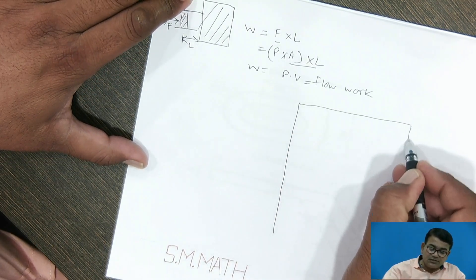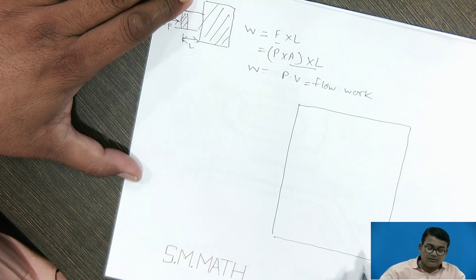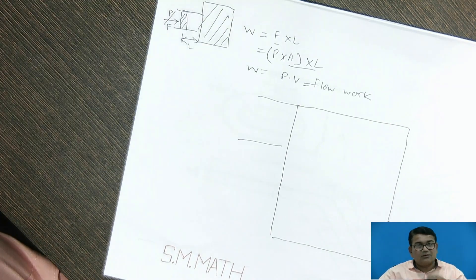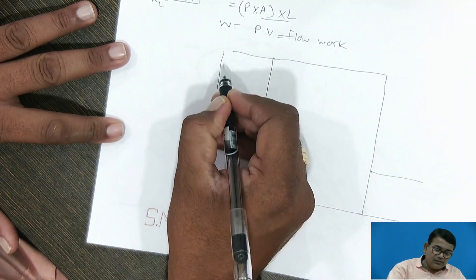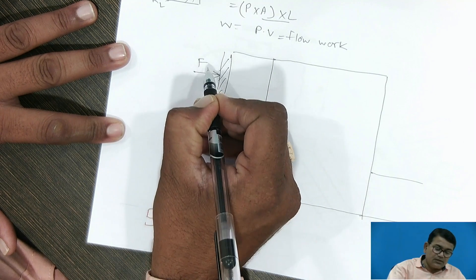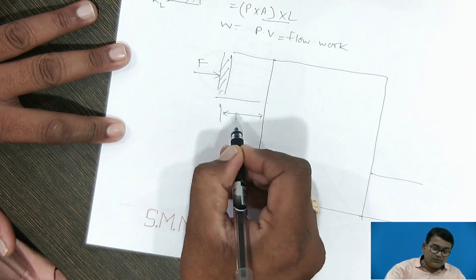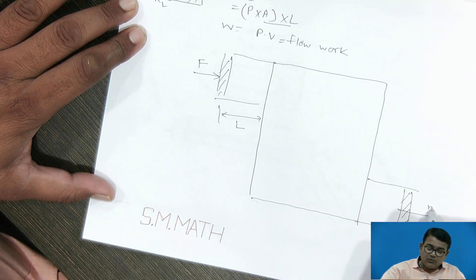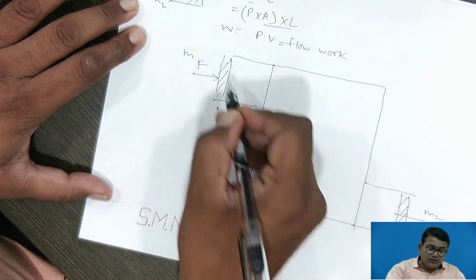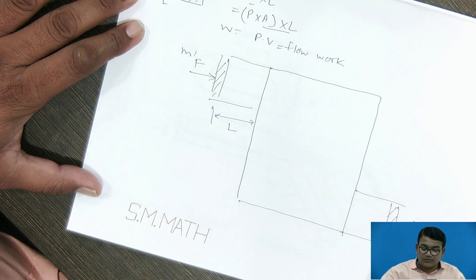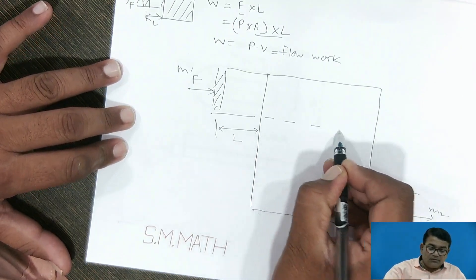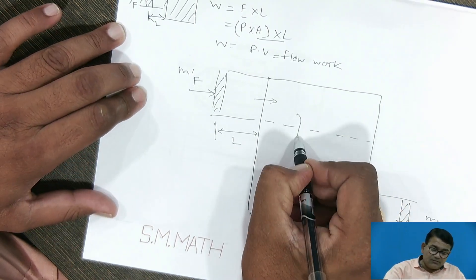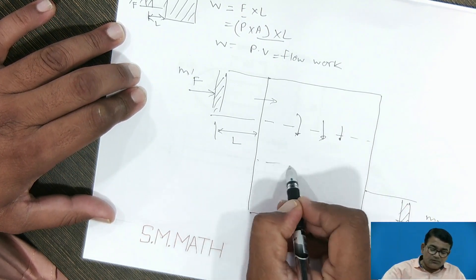Basically, mass entering in that system and mass leaving from that system — that mass itself acts as an imaginary piston on that particular layer of that control flow. The mass entering in that system acts a force F, and with the same concept of distance traveled L, entry mass is M1 and exit mass is M2, the same mass leaving from that system. So in that particular layer, whatever the mass entering in that system, it itself acts as a piston on that particular layer.